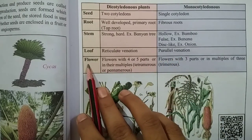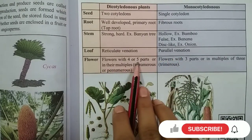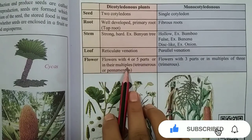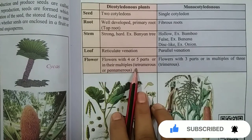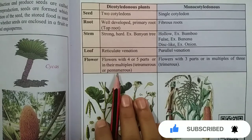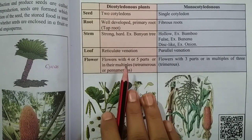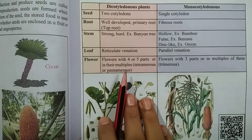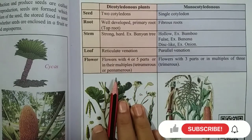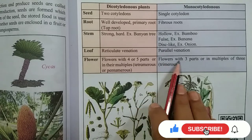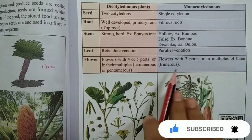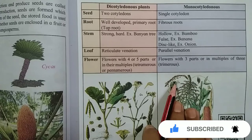Regarding flowers: dicots have flowers with four or five parts or in their multiples. Monocots have flowers with three parts or in multiples of three.